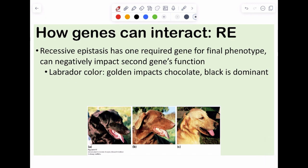Golden retrievers. Or labradors, excuse me. Because the golden may be golden, and then I jump to retriever. Is it better to have purebred dogs or mutts? Yes. Okay. As long as we have that. RE. Recessive epistasis. What this is, is you require one of the genes to get all the way to the final phenotype, but you can negatively impact the second gene's function.